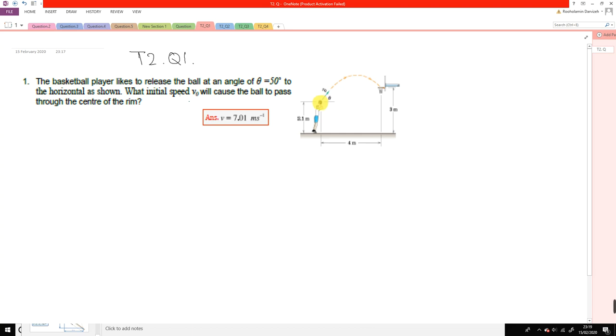For projectile motion as we discussed in lectures, we usually prefer to use a fixed Cartesian coordinate system. I put my coordinate system origin here at the initial position of the ball. You can put it anywhere else. The result should be the same.